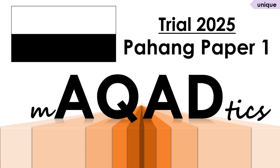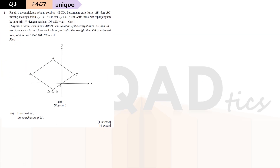So without further ado, let's go through the discussion of this paper. Our first question comes from the coordinate geometry chapter. In the diagram, we are given a rhombus — a kite-shaped polygon. As you can see, it has the shape of a kite. In the question, they gave us the equations of two straight lines, which are line AB and line BC.